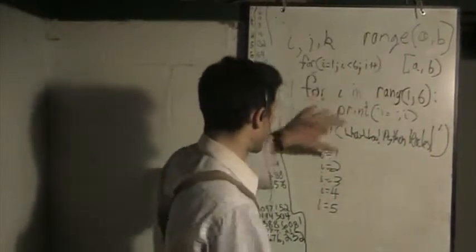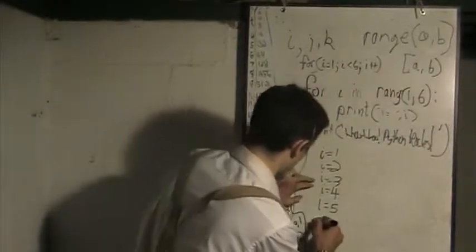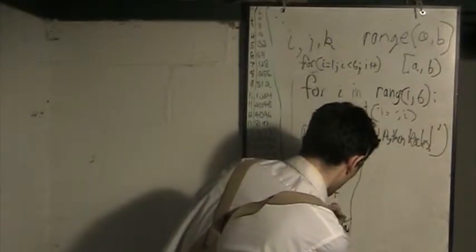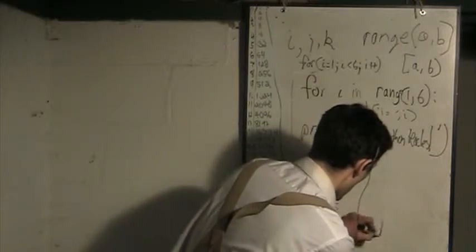Oh, no, it does include 6. So then it breaks out of that for loop, that iteration is complete, that loop is complete. And then it just prints, woo, who, Python rocks.